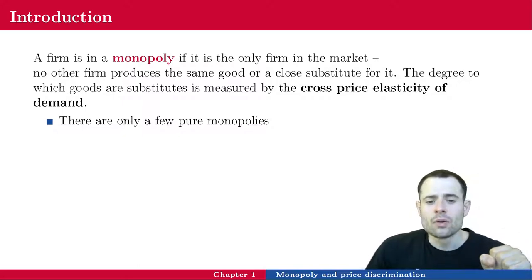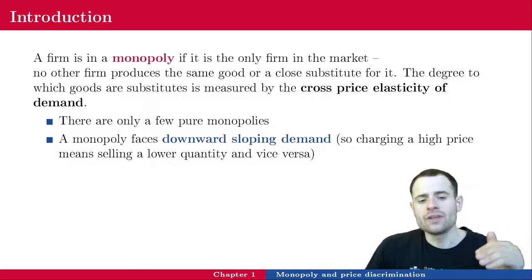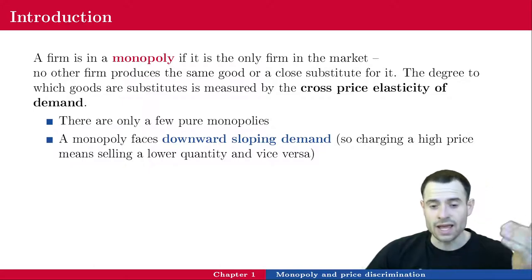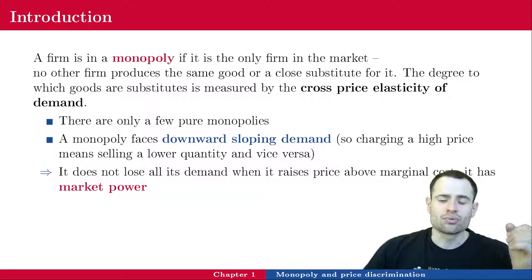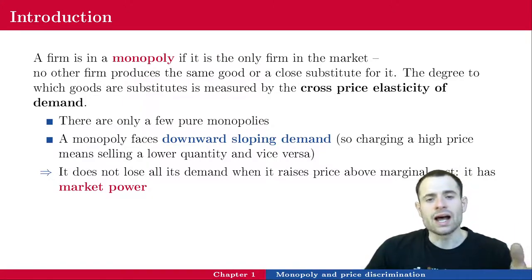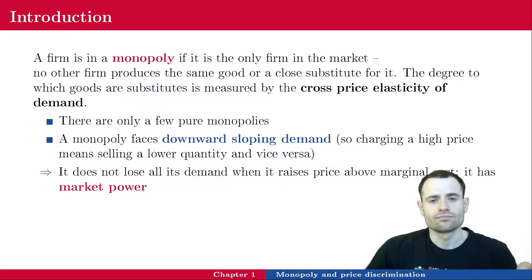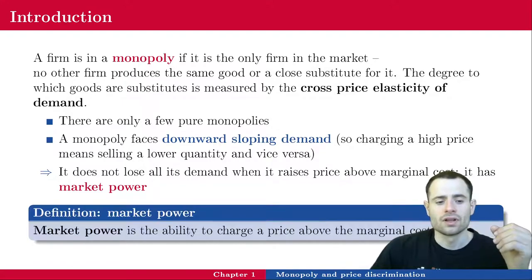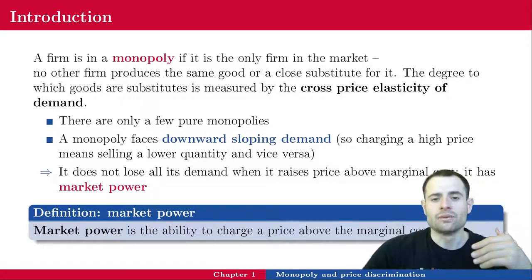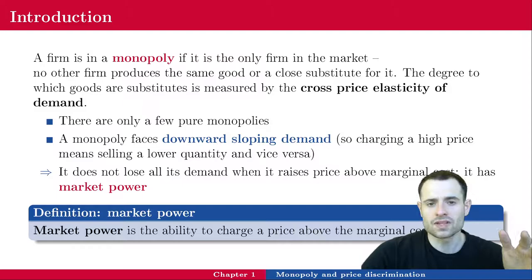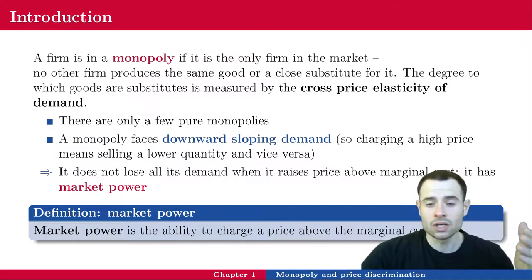In real life, there are only a few pure monopolies. A monopoly faces a downward-sloping demand, so charging a high price means selling a lower quantity and vice versa. What's specific about a monopoly is that increasing the price does not mean losing all of the demand — because the monopolist is the only firm in the market, it has market power. If it increases the price, it might sell less, but it won't sell zero. Market power is the ability to charge a price above the marginal cost. In perfect competition, price equals marginal cost and profits are essentially zero.